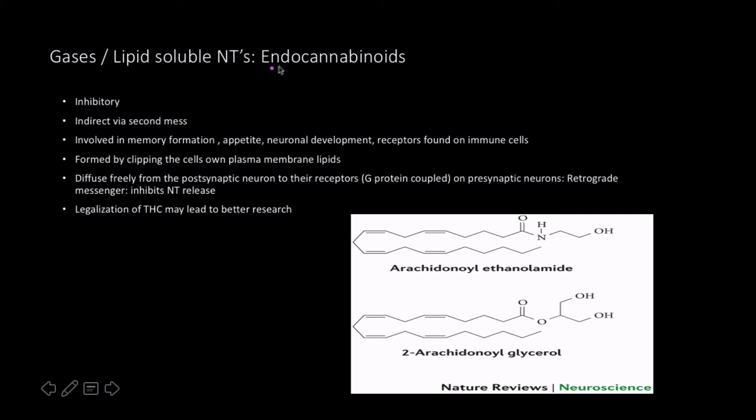So the last ones are known as endocannabinoids, also lipid soluble. They tend to be inhibitory. They act via a second messenger. Involved in a lot of memory formation, appetite, neuronal development, and it actually has receptors found on the immune cells. No idea why.